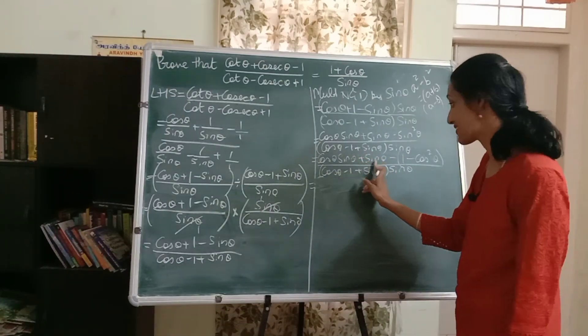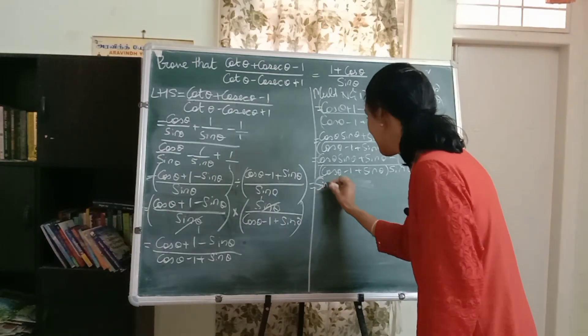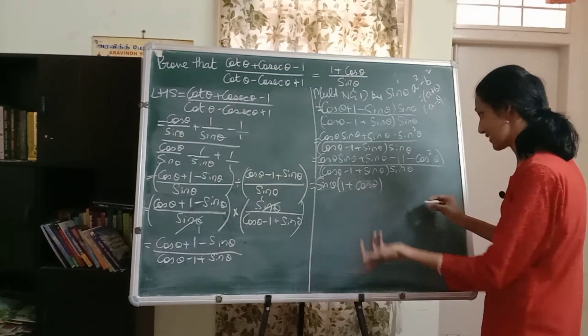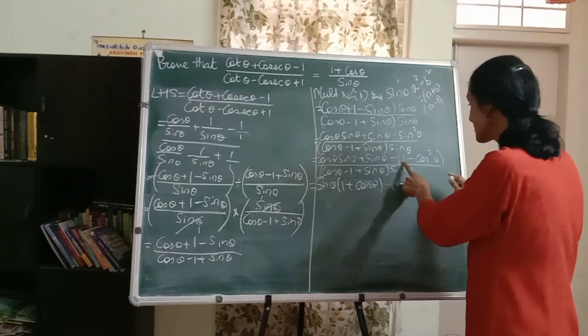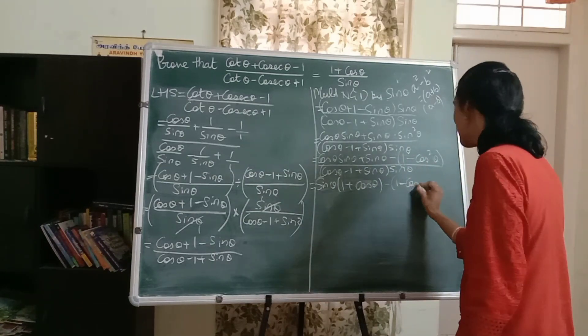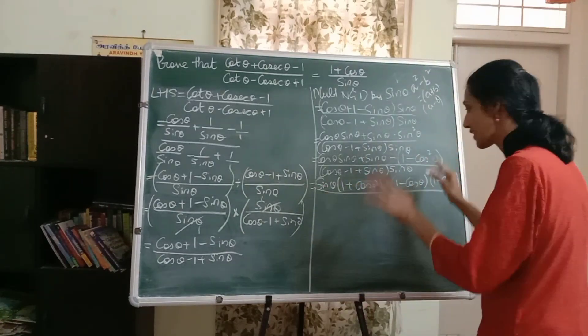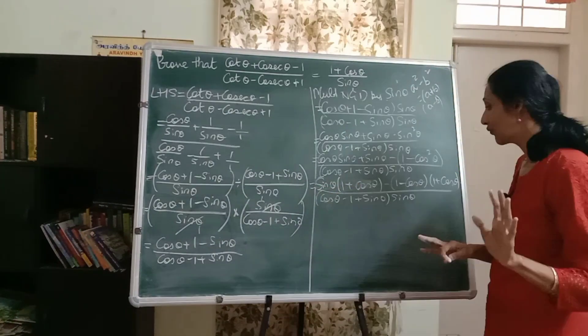Also, did you see there is a sine theta in both these terms? I can take it common. Let's see what happens. So I get one plus cos theta, which is good. And this I can write as one minus cos theta into one plus cos theta. Again, denominator, same thing. Copy.